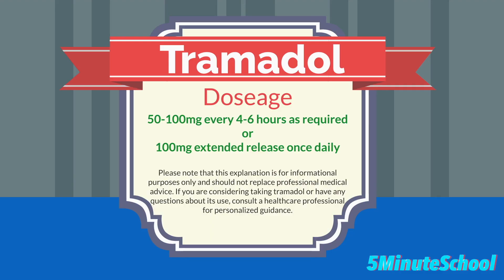Tramadol dosage may vary based on the severity of pain, the patient's age and their response to the medication. The usual adult dosage is typically 50 to 100 mg every 4 to 6 hours as needed for pain relief. For the extended release formulation, doses are usually 100 mg once daily and can be adjusted as necessary. It's crucial to follow the doctor's instructions and not exceed the prescribed amount to avoid potential side effects and dependence.